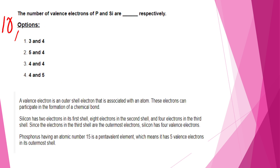The number of valence electrons of phosphorus and silicon are respectively: Option B is 5 and 4. Valence electron is an outermost electron associated with an atom; those electrons are part of the formation of a chemical bond. Phosphorus has 5 valence electrons — it is pentavalent, so 5 valence electrons should be added.